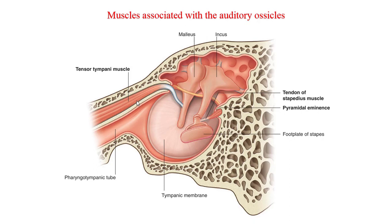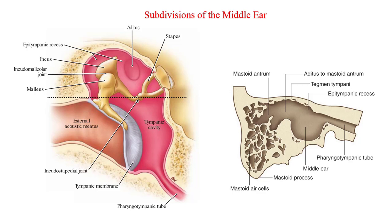Now we've examined the bones and their attachments, let's move on to discuss the landmarks of the cavity itself. The middle ear or tympanic cavity is air-filled and lined with a mucous membrane. The cavity of the middle ear can be subdivided into the tympanic cavity proper, which is opposite the tympanic membrane, and the epithympanic recess, which lies above the level of the tympanic membrane. The middle ear communicates anteriorly with the nasopharynx through the auditory tube, and posteriorly with the mastoid antrum and mastoid air cells through the aditus to the mastoid antrum.